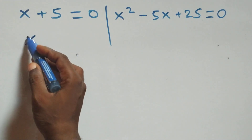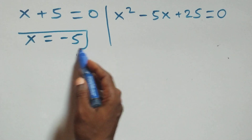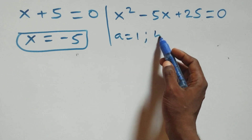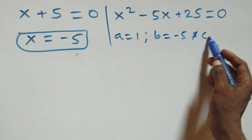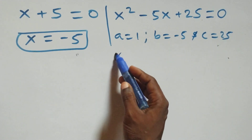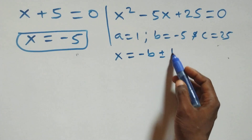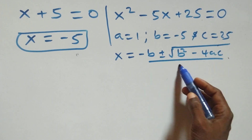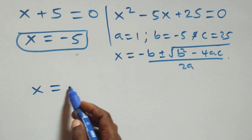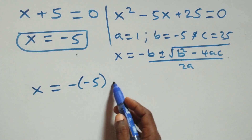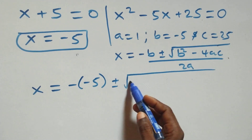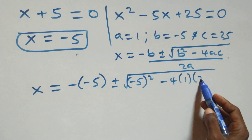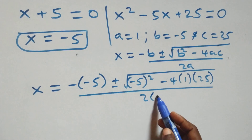Solving the first sub-case we get x equals to minus 5. For the quadratic x squared minus 5x plus 25 equals 0, we apply the quadratic formula with a equals 1, b equals minus 5, c equals 25. We get x equals minus b, that is plus 5, plus or minus square root of b squared minus 4ac, all over 2a: x equals 5 plus or minus square root of minus 5 squared minus 4 times 1 times 25, all over 2 times 1.